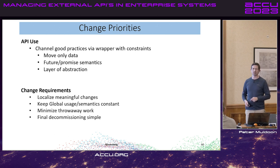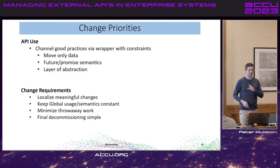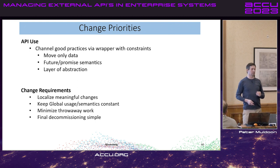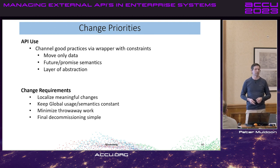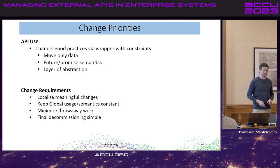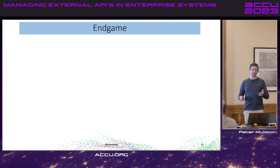To recap: as a consumer of APIs, we channel good practices via a wrapper abstraction — giving us move-only data so the system is efficient, future-promise semantics instead of old callbacks, and a layer of abstraction that acts as a shock absorber for change. When requirements changed — a completely new response from a different system, while keeping production running — we localized meaningful changes to the service proxy and error handling files, kept global calling semantics the same, minimized throwaway work, and made decommissioning simple. The abstraction is the key to absorbing punishing change without taking production down.